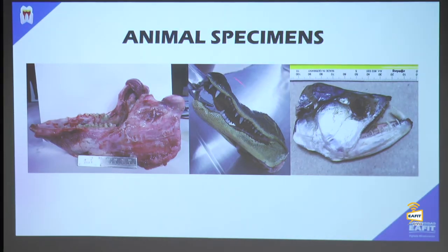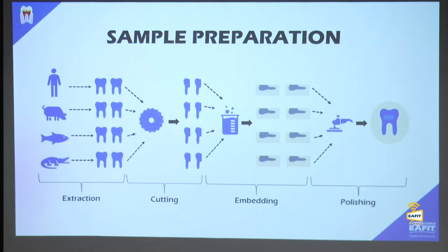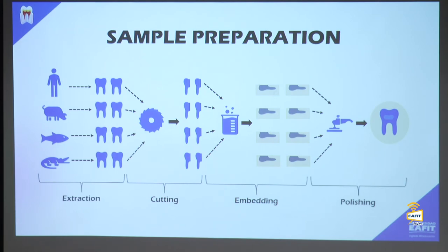The specimens included the jaw of the pig, the alligator jaw, and the payara fish. Since tooth geometry is not easy to work with, we embedded the samples in cold-cure epoxy resin to guarantee surface flatness. We took two molars from each sample, cut them with a diamond saw, embedded them, then polished and ultrasonically cleaned the surfaces.